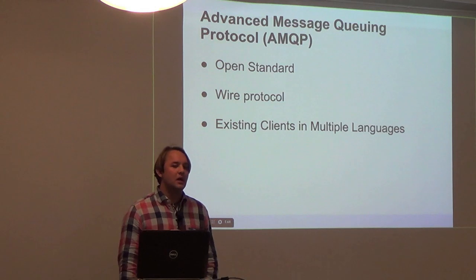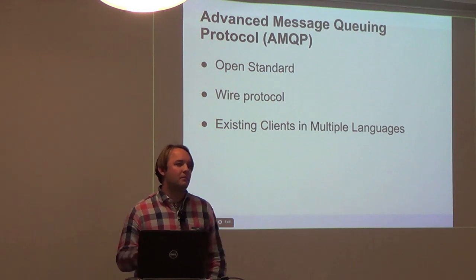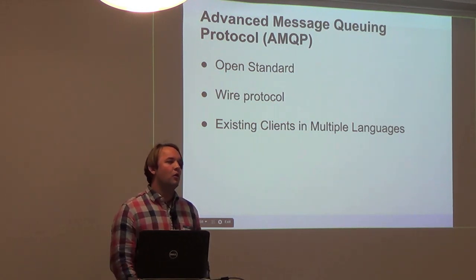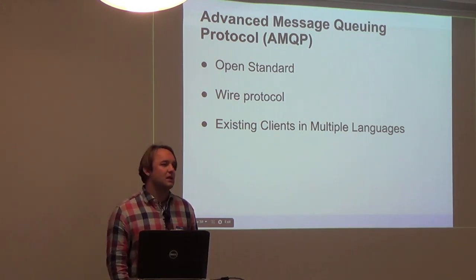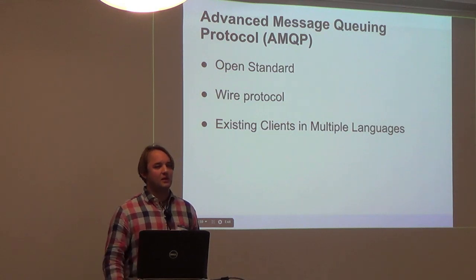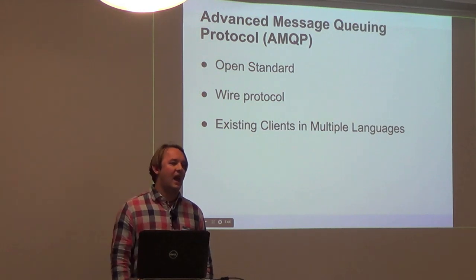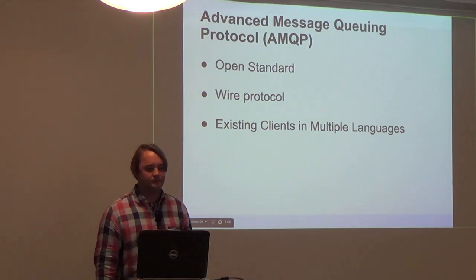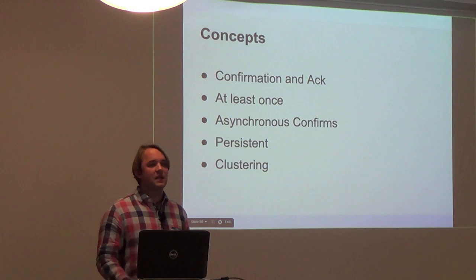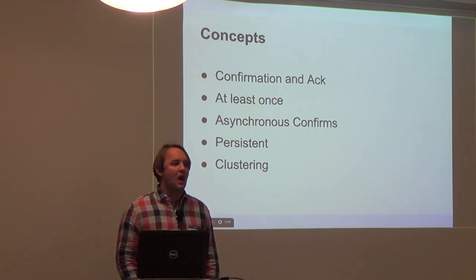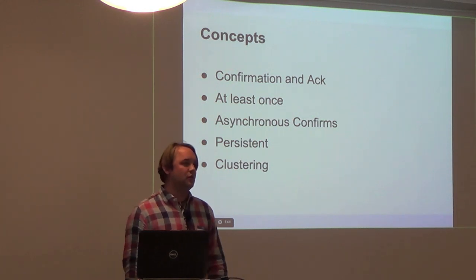RabbitMQ uses the Advanced Message Queuing Protocol (AMQP). This is an open protocol contributed to by multiple companies, and it's also a wire protocol, which makes it very easy to write clients for. There are lots of existing clients already available that speak AMQP, which helps given that our aggregation engines run in multiple programming languages.